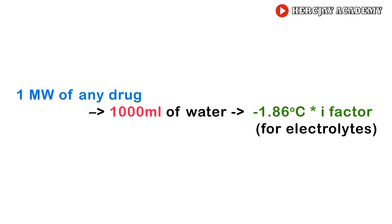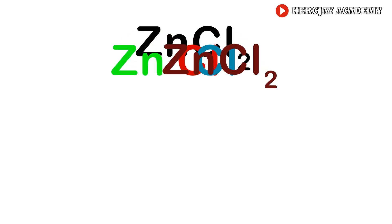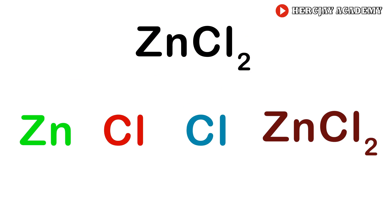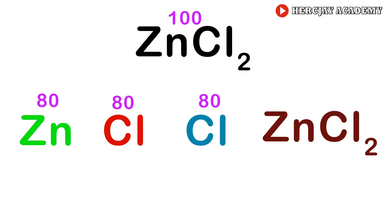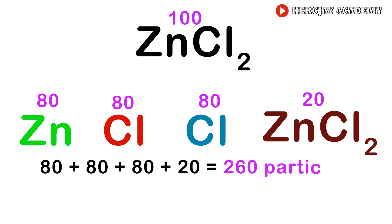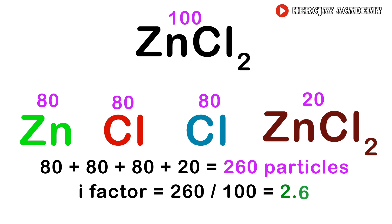The molecular weight of zinc chloride is 136 g. We calculate the i-factor from the fact that it dissociates 80%. ZnCl₂ dissociates into Zn²⁺ and 2 Cl⁻. Starting with 100 particles, 80 dissociate into 80 Zn, 80 Cl, and another 80 Cl, while 20 remain as ZnCl₂. The total is 80 + 80 + 80 + 20 = 260 particles. Therefore the i-factor = 260 / 100 = 2.6.